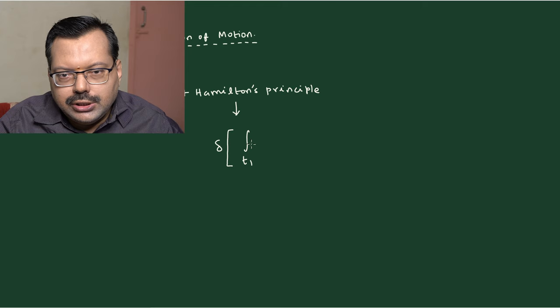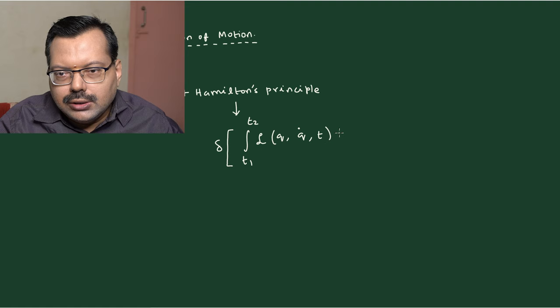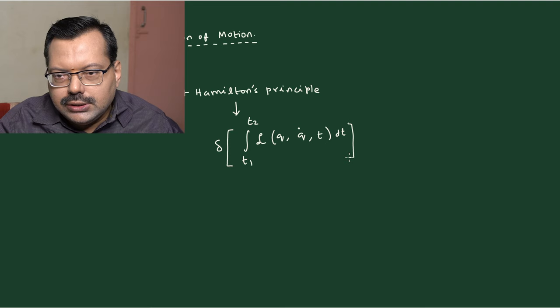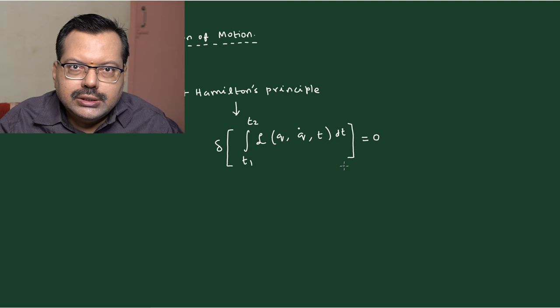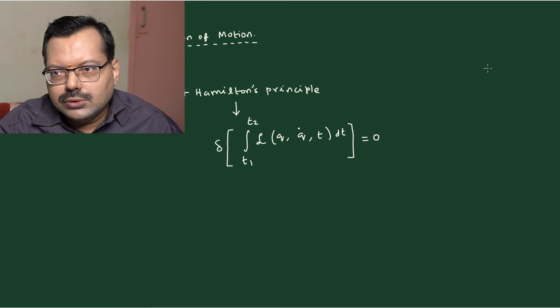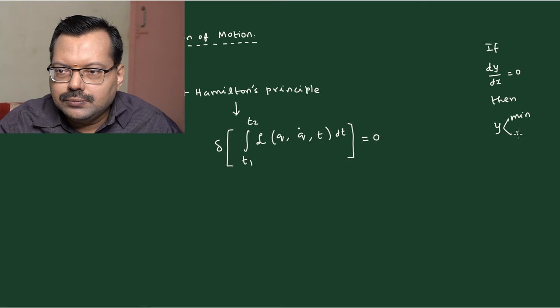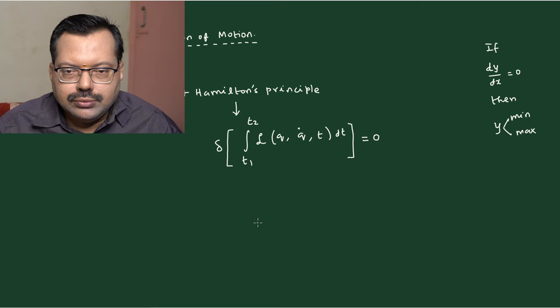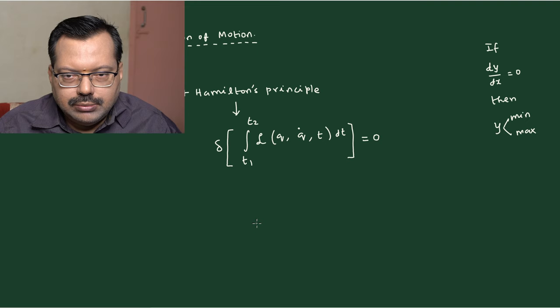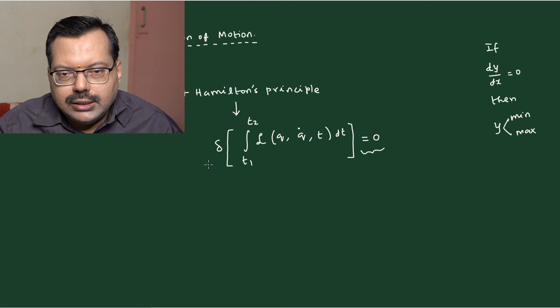We have an integral from t1 to t2 of the Lagrangian function, which is a function of the generalized coordinate, generalized velocity, and possibly time, integrated with respect to time dt, and this is equal to zero. The condition of making this equal to zero is to say that the first-order derivative of a function is equal to zero — in simple calculus, dy/dx = 0 means y can attain a minimum or maximum. Setting the first derivative to zero is the requirement to investigate maximum and minima.